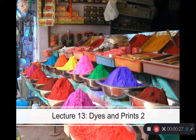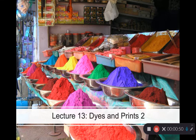Dyes tend to dissolve in water or other liquids so that all parts of the fiber are surrounded by the dye — from the surface of the fiber to the center of it — and so all parts are intended to be colored. Dyes therefore have to be compatible with the fibers that they're dyeing, and that has to be thought out beforehand.